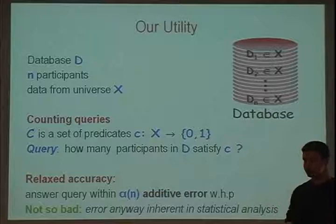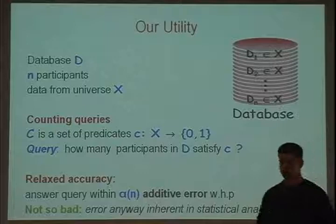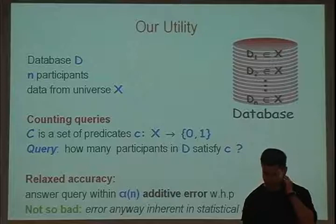So having some error is not so bad — the question is how much. Error close to 0 is great; error close to n means we're not getting meaningful answers. The magic number to think of throughout the talk is square root of n, because that's the sampling error for large events. If we're very close to square root of n, we're happy; if we're below it, we're happy. If we're above it, we're paying something.